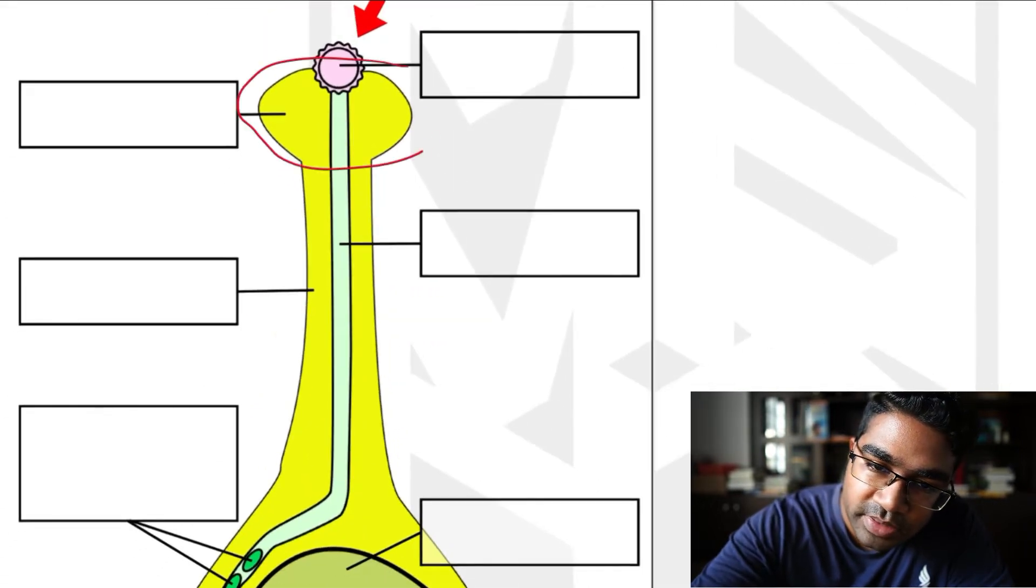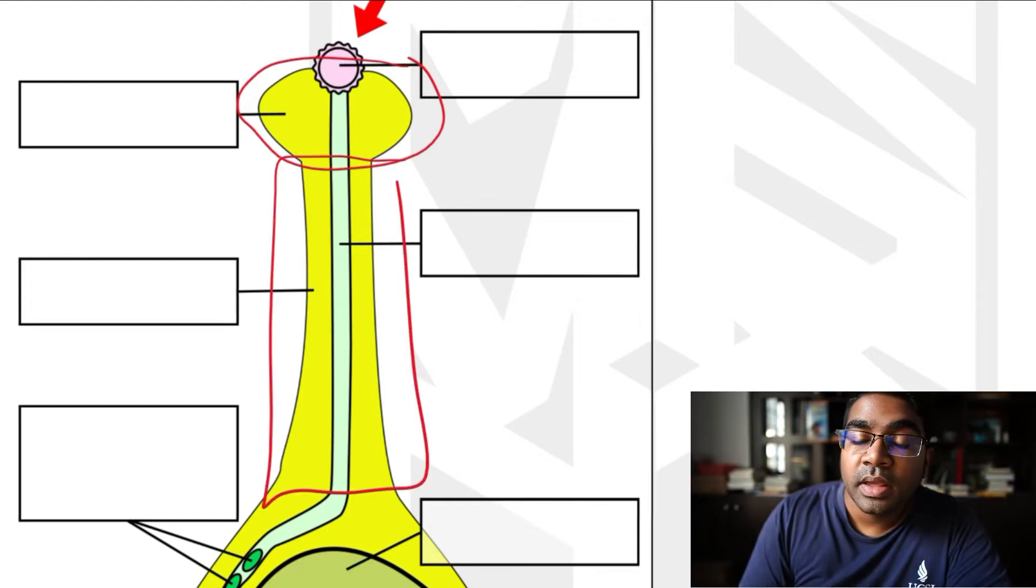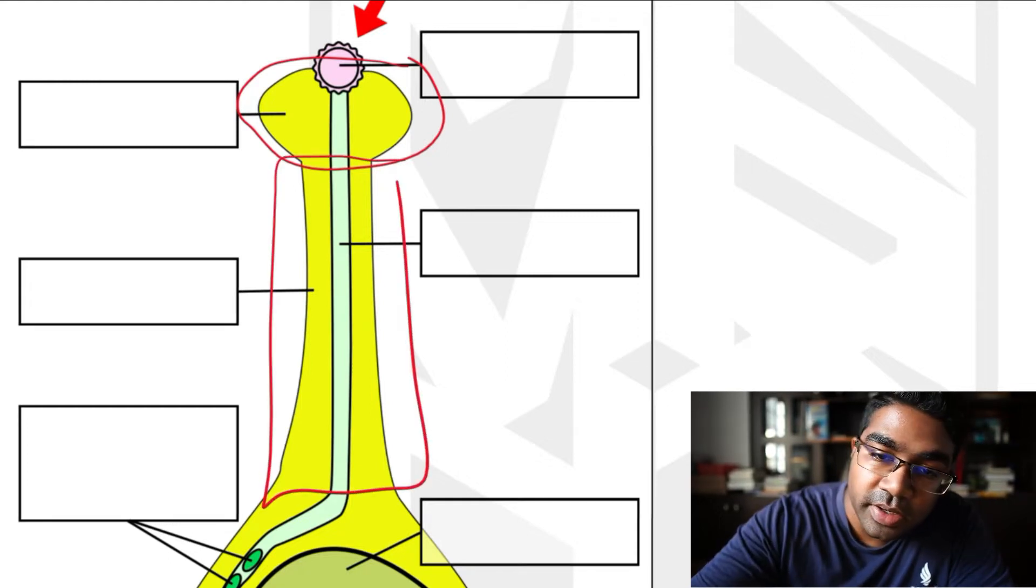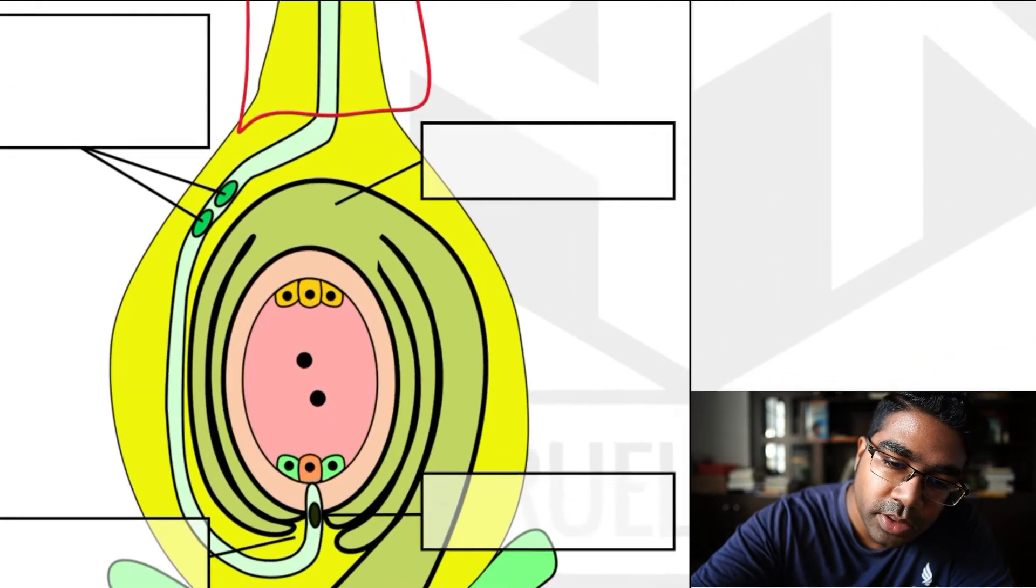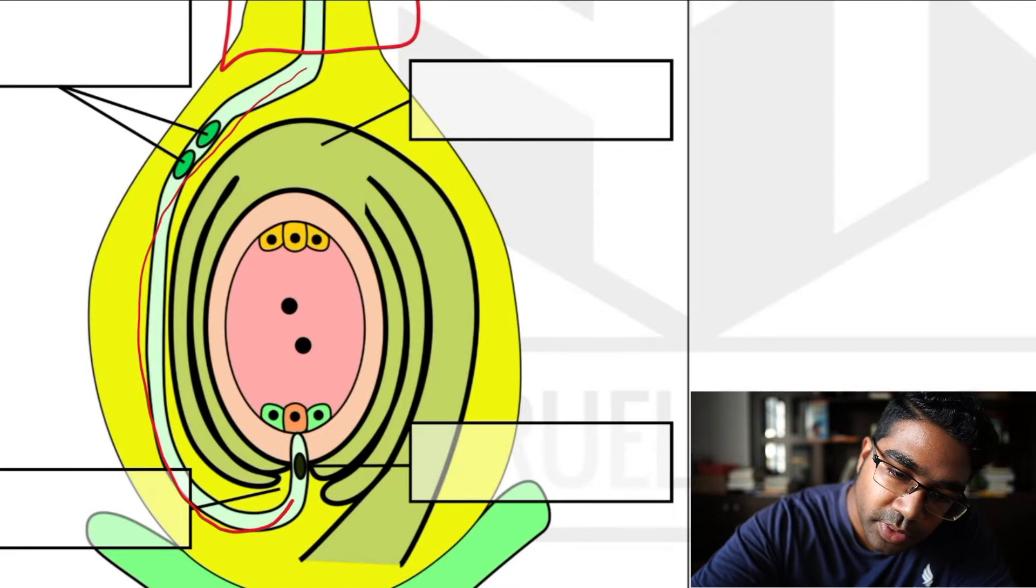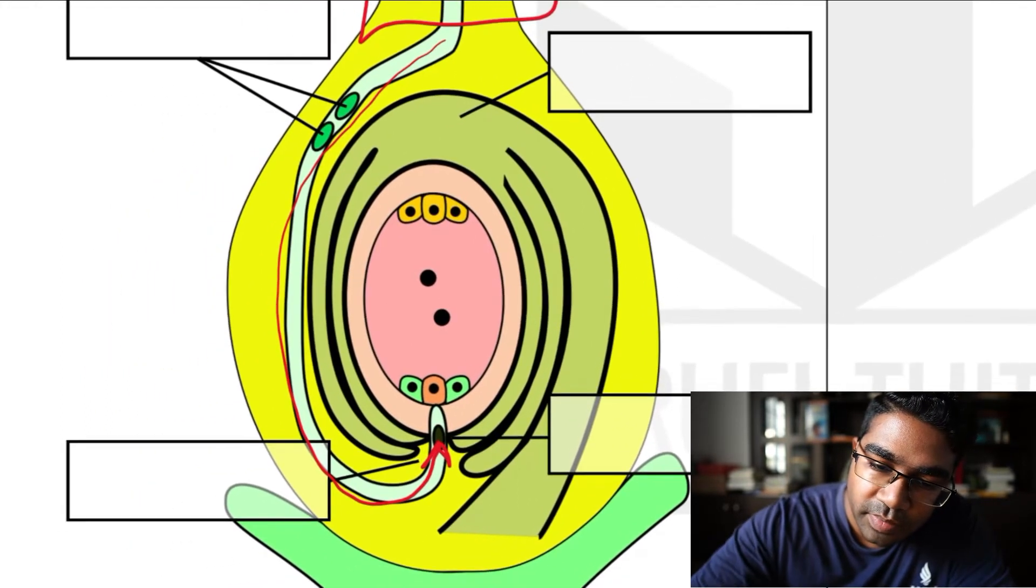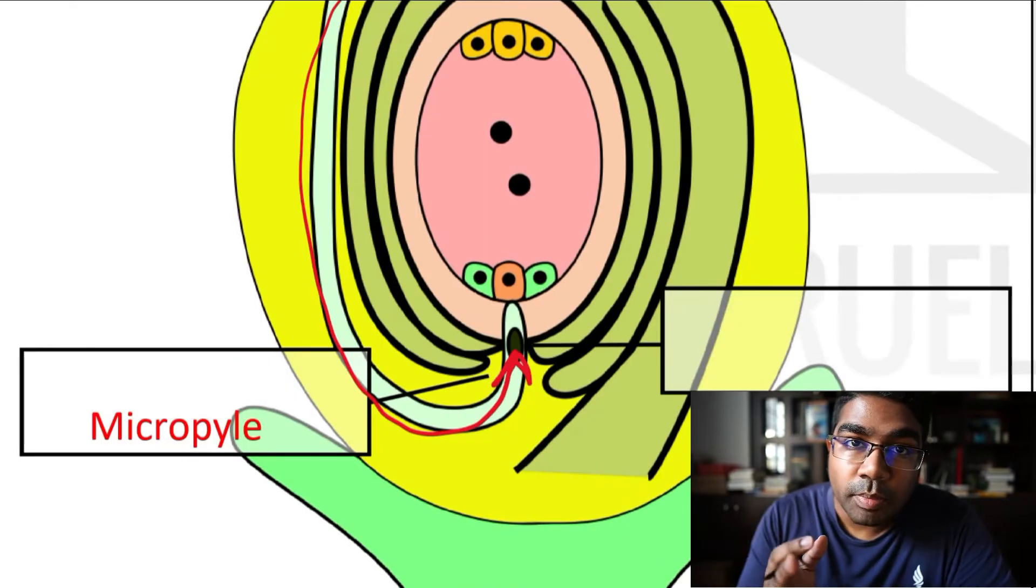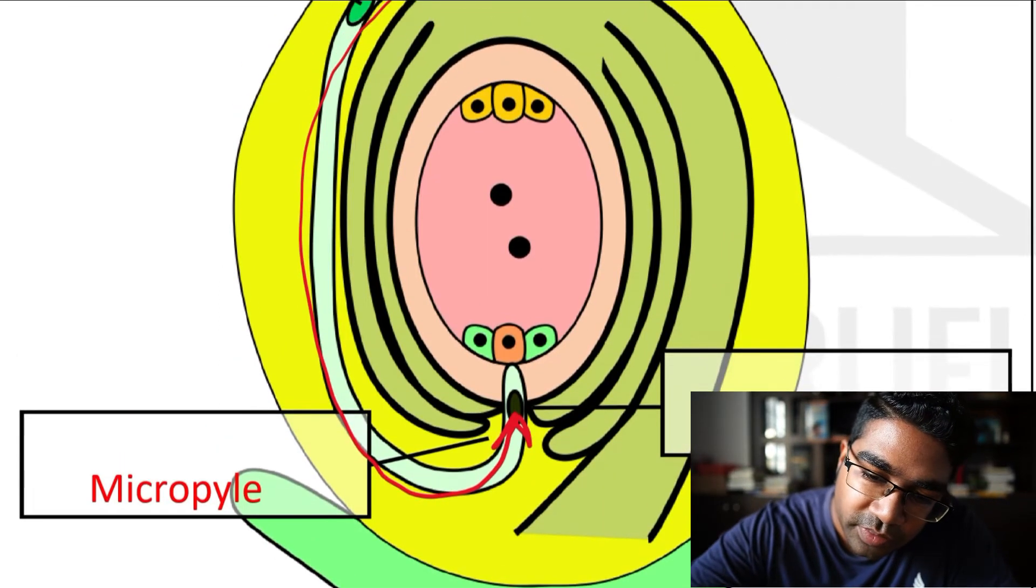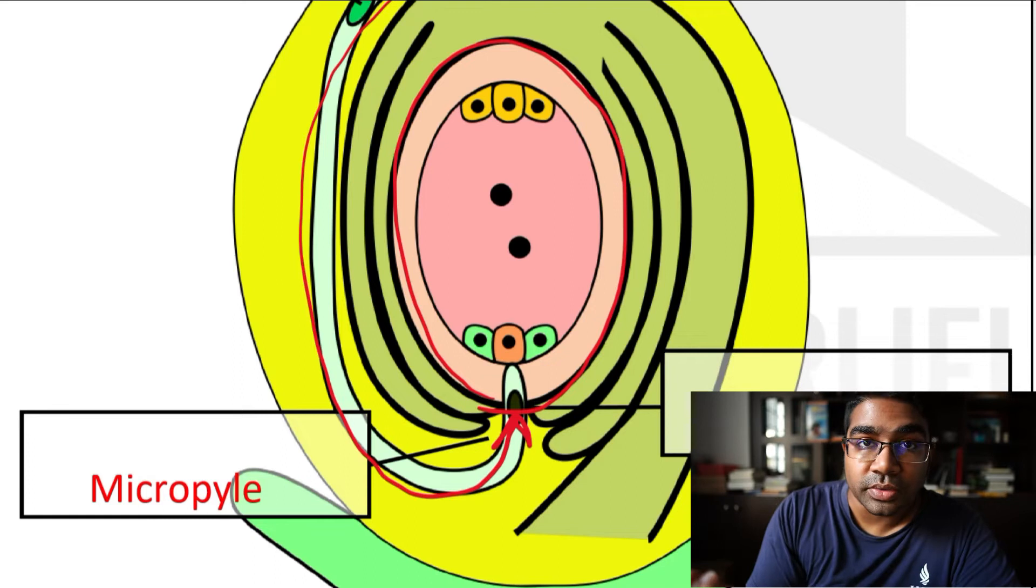So this top part is the stigma, just a bit of revision. The middle part is the style. And so it's going to penetrate the style and go down all the way past the ovary to the bottom into this part here. So the entrance here is called the micropyle. The micropyle is the entrance, the small hole to this. And this thing here is the embryo sac.